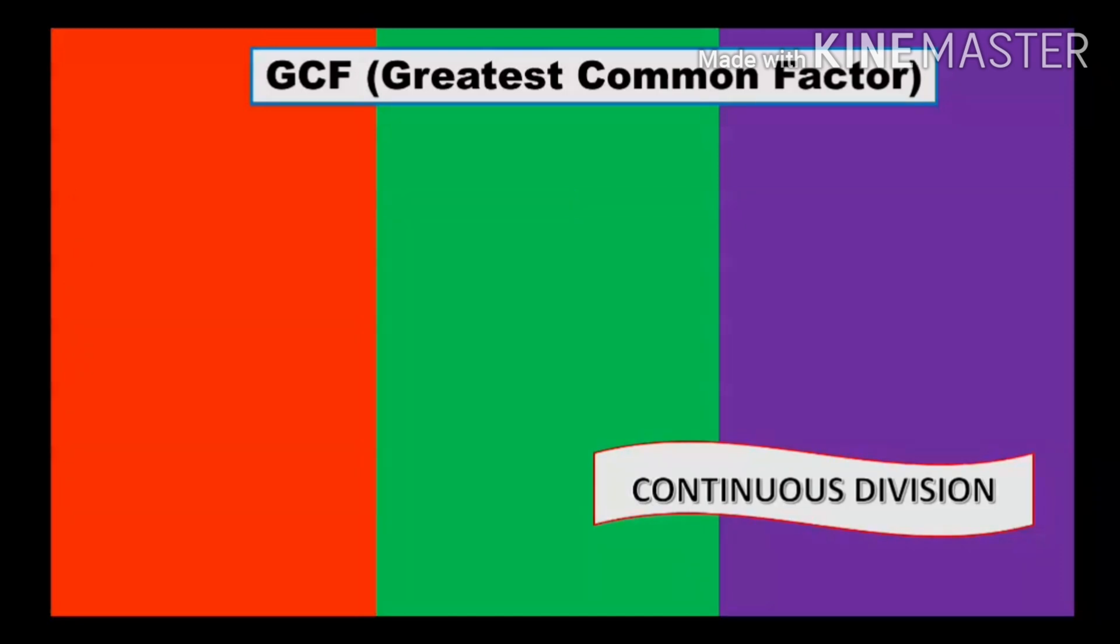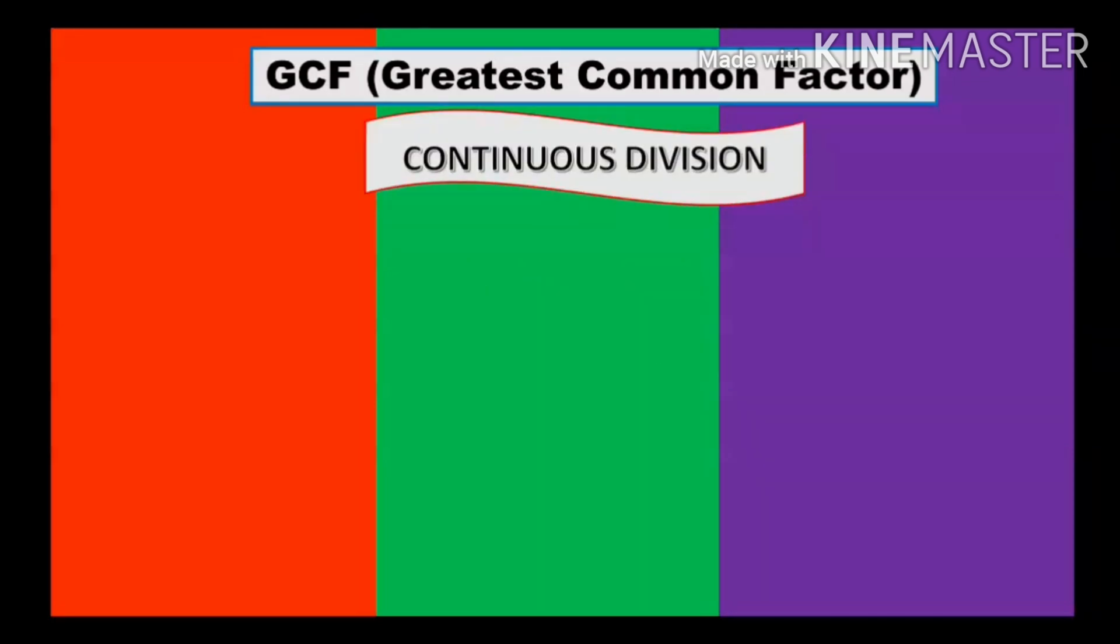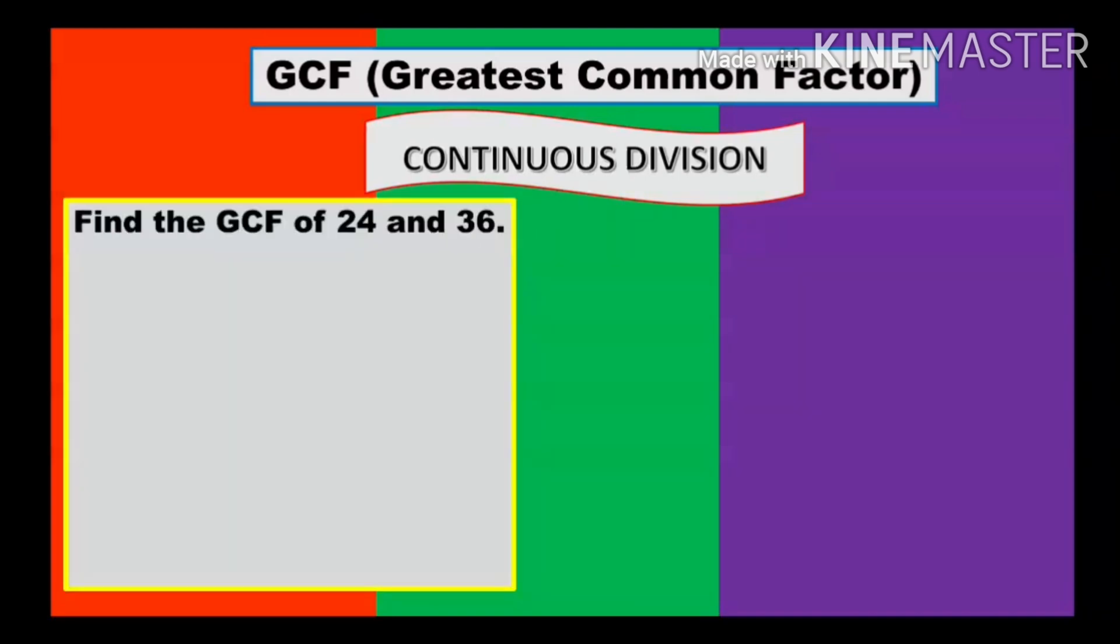Let's practice this method on how to use it. I will give you some examples to show how this method is being used. Let's try the first example: find the GCF of 24 and 36. Since we are using this method, we will use the operation of division. First thing, list down the numbers horizontally. Then, we will use the division sign inverted, because we're dividing downward. Think of a number that can be divided into both 24 and 36. A divisor or factor. It's very simple because it's an even number. Very good, 2.